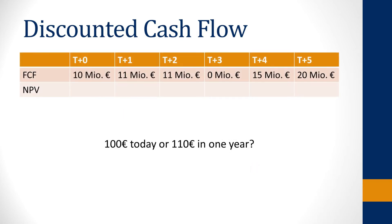But what is money earned in the future worth today? It is the same question as if somebody offered you a choice: would you prefer getting 100 euros today or 110 euros in one year? To answer this, it is important to know your individual discount rate. If you would get one percent interest on the 100 euros, your discount rate would be one percent. Thus, the 110 euros in one year are today worth 108 euros and 91 cents — more than 100 euros — so it would be better to choose 110 euros in one year. When discounting cash flows, one does the same with the free cash flows.